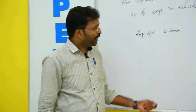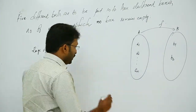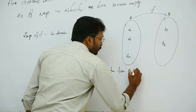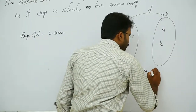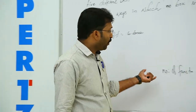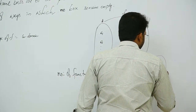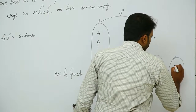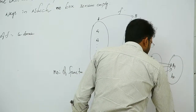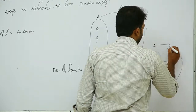We consider the function f from set A to set B, where A contains n elements and B contains only two elements. Therefore, the number of functions from A to B is 2 raised to n. Among these 2^n functions, not all are onto, because some functions like a1, a2, etc. map into only b1.